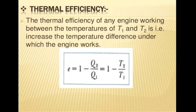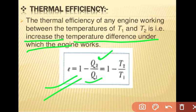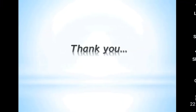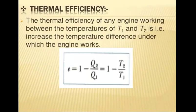The thermal efficiency of a Carnot cycle engine working between temperatures T1 and T2 is: η = 1 − Q2/Q1 = 1 − T2/T1, where Q1 is the heat taken from the source and Q2 is the heat released to the sink. This is the expression for thermal efficiency of the Carnot cycle engine. This covers thermodynamic laws and entropy — I hope this is very useful for all of you. Thanks for watching.